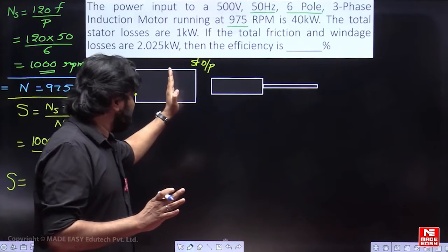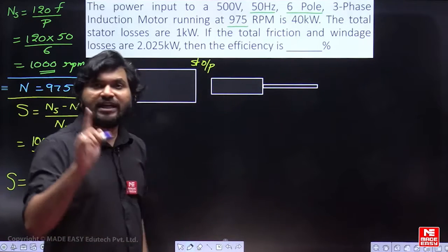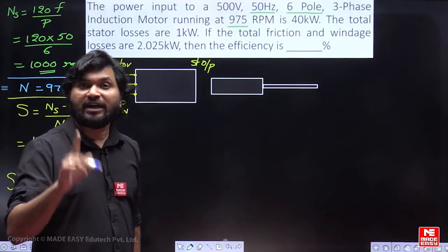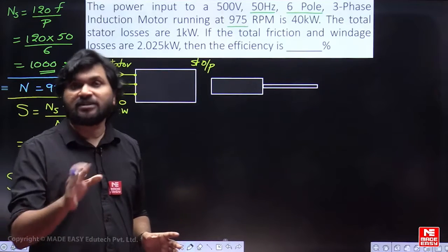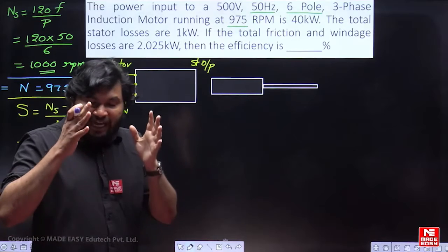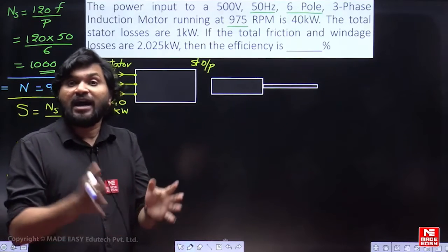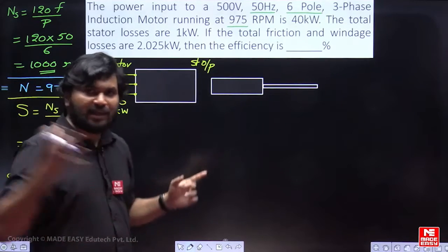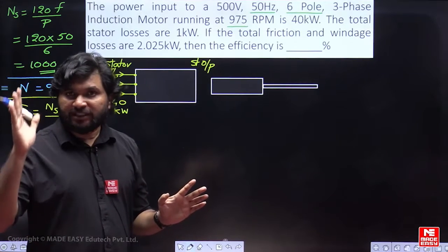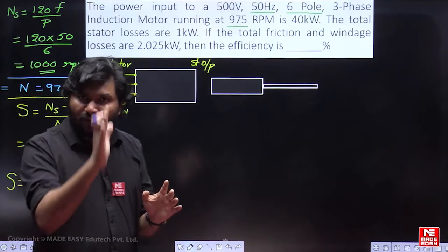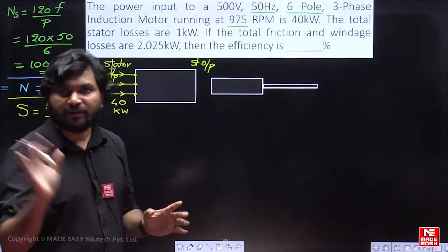But now, the magnetic field is passing from stator to rotor in air gap. Air gap don't contain such losses. The problem is, high reluctance it will produce. Due to that high reluctance it is offering, high magnetizing current is required. That's a separate story. No losses. Stator output is exactly equal to rotor input called as air gap power.